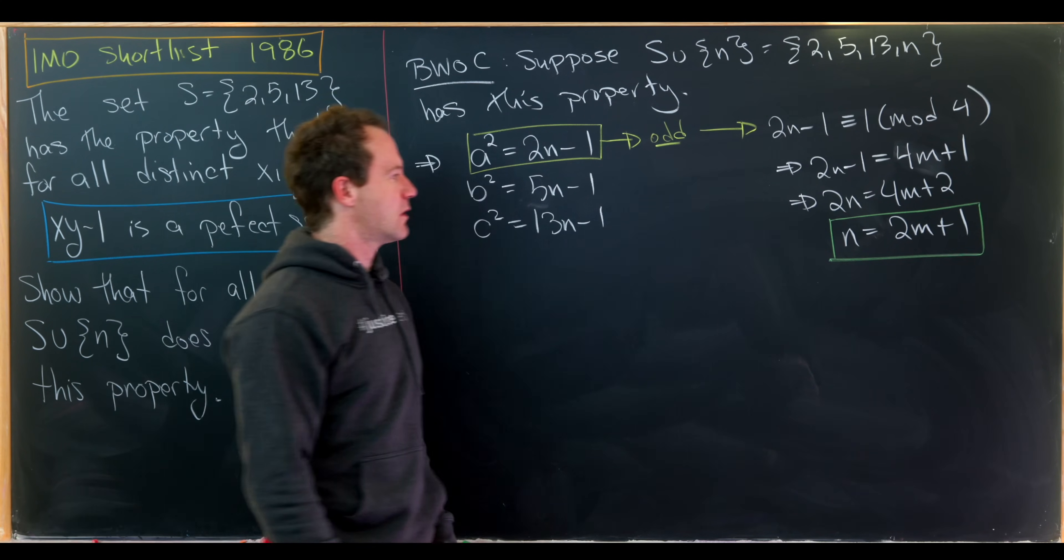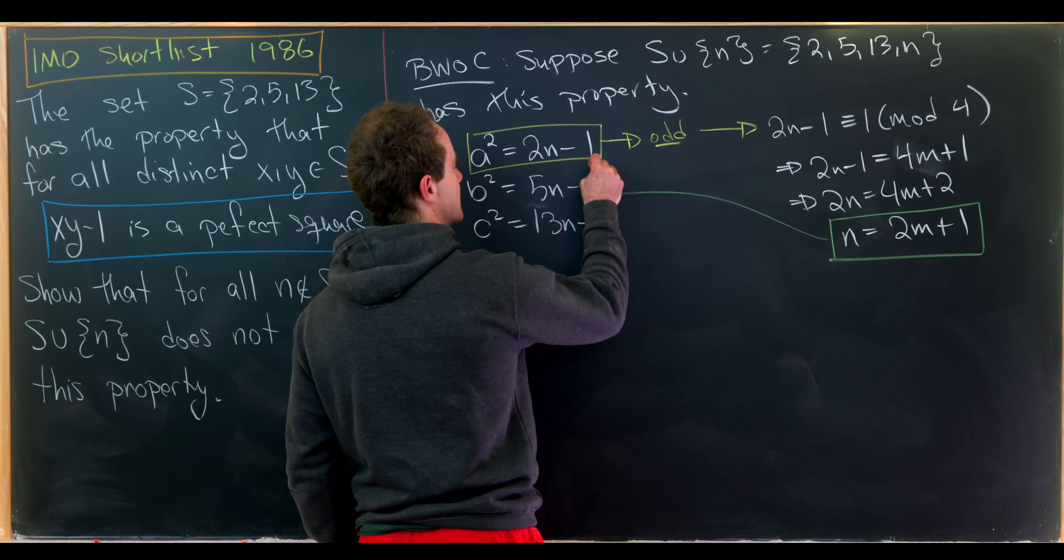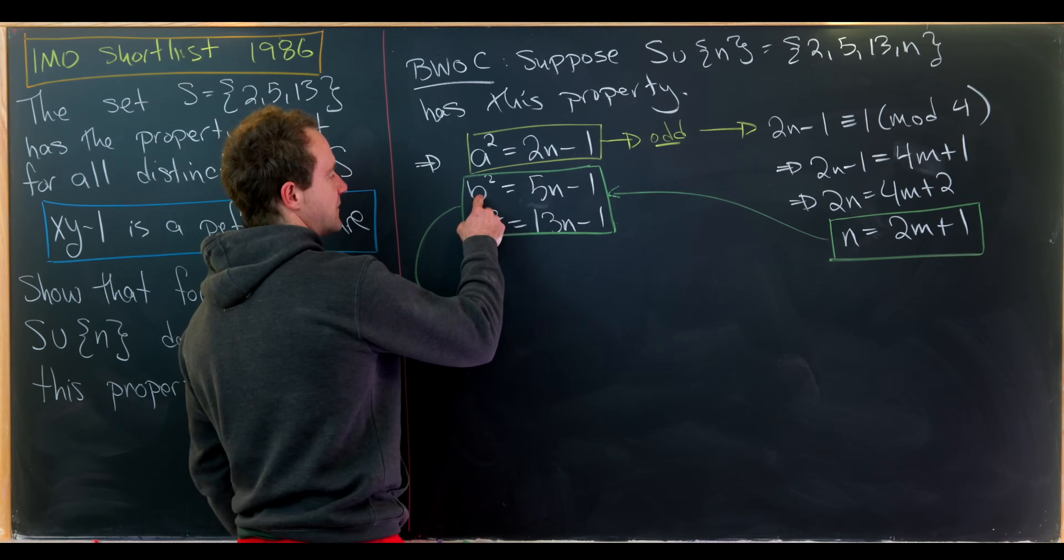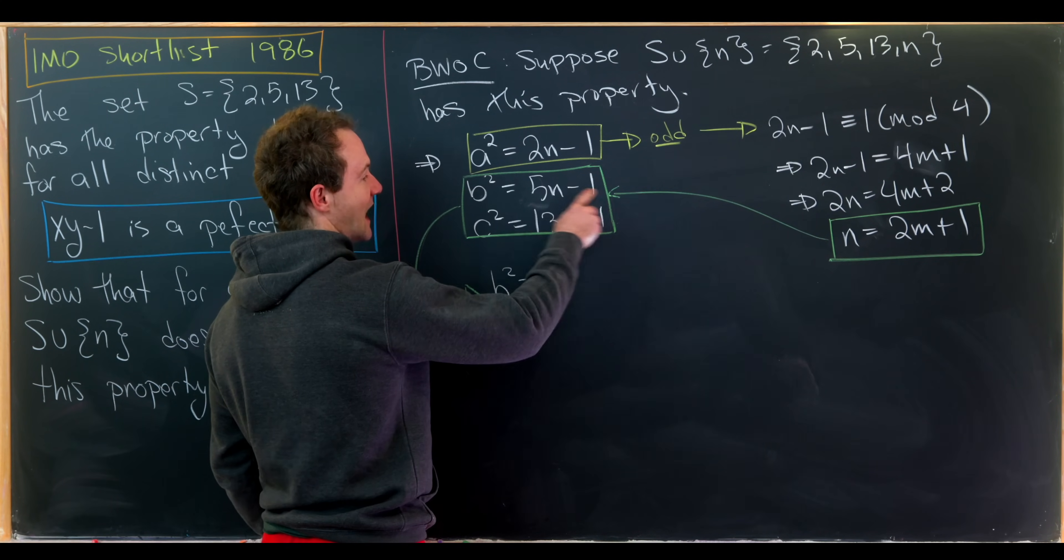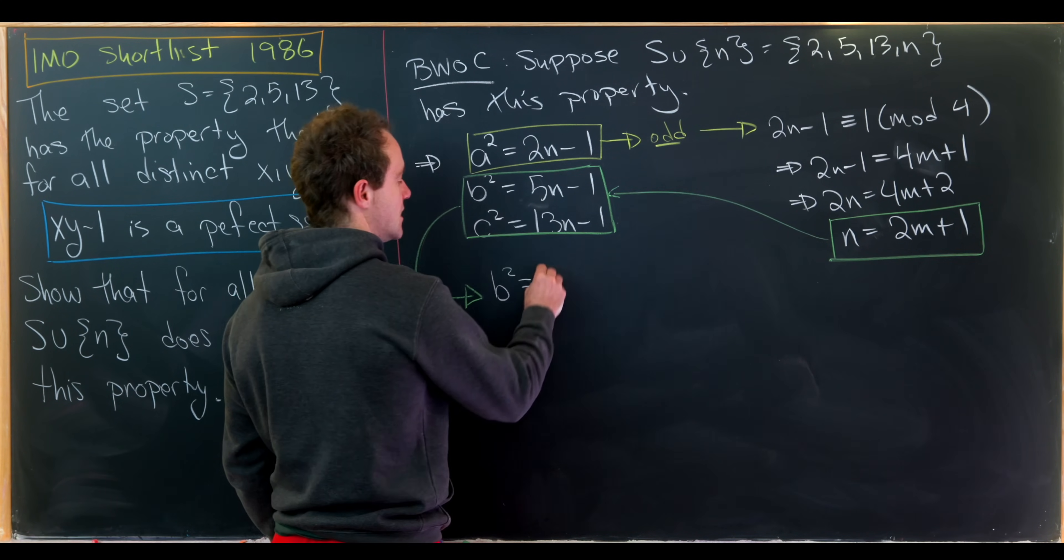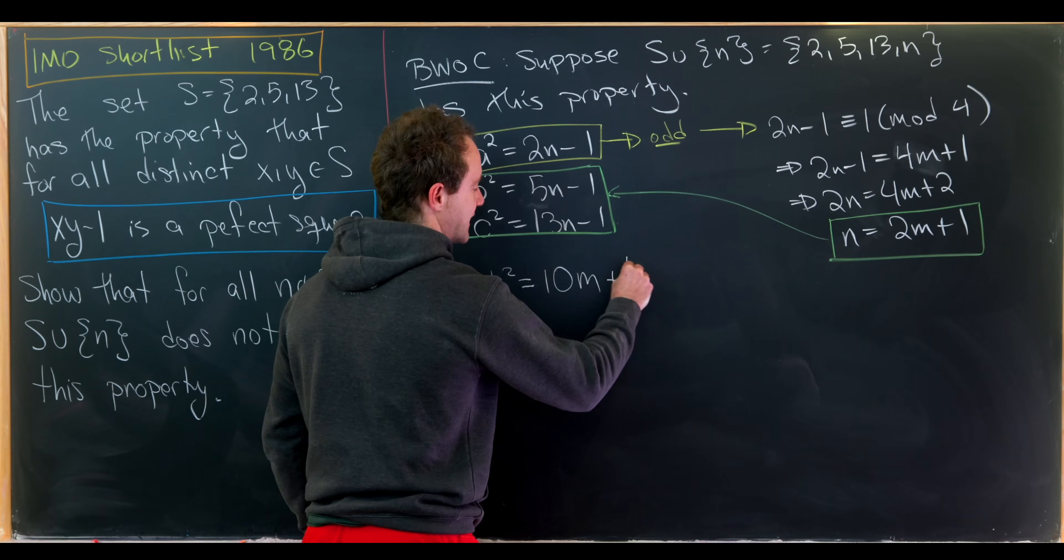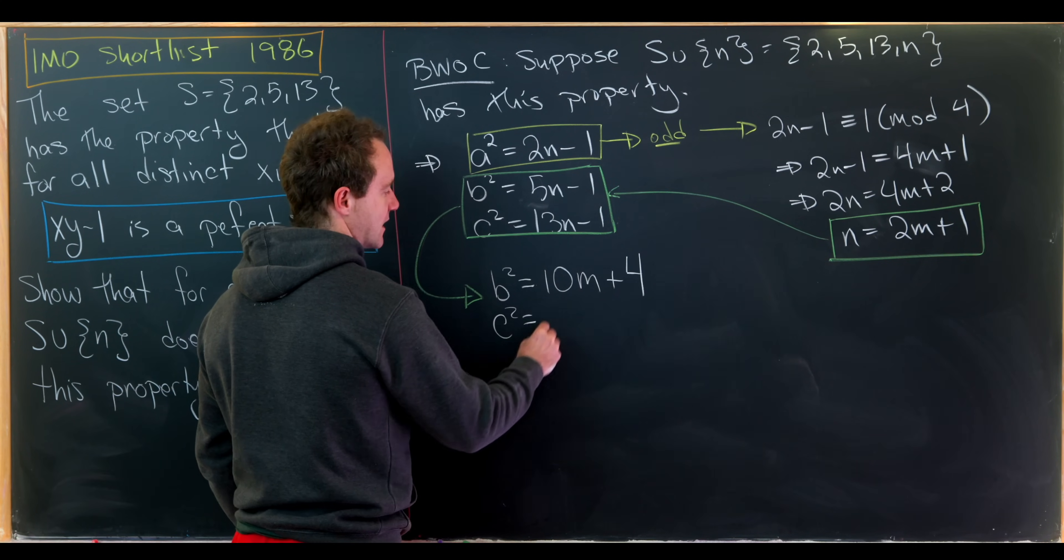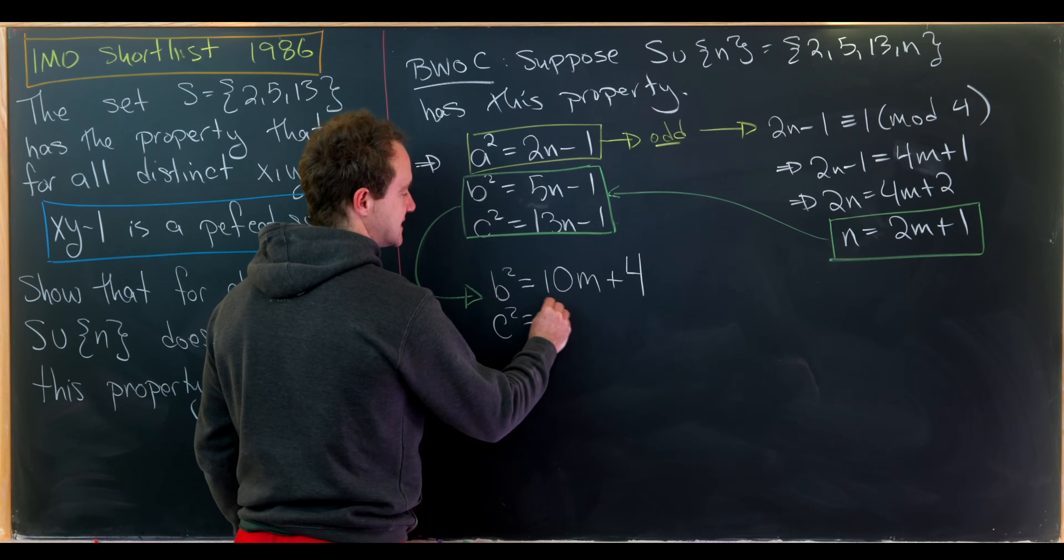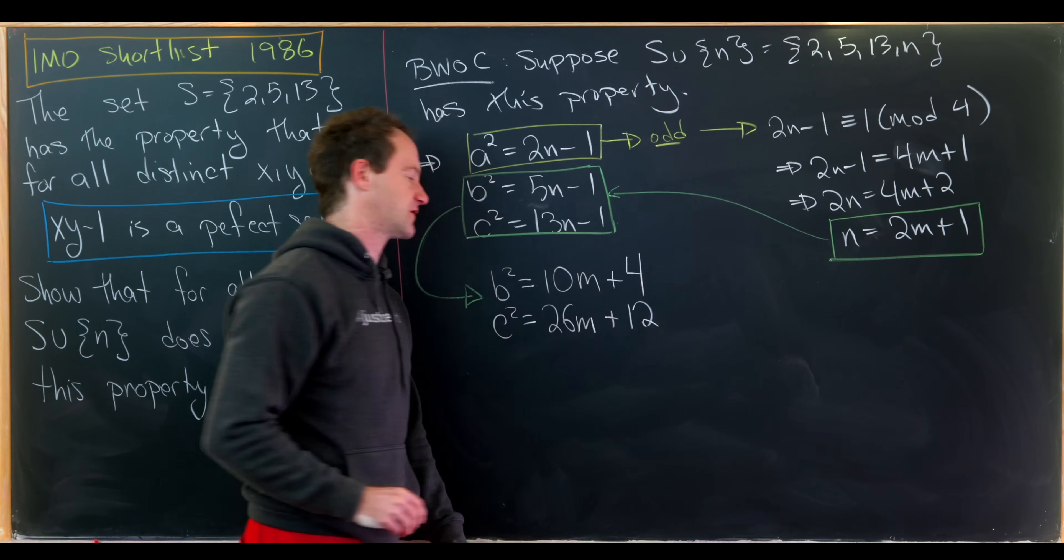Okay, so now what we'll do is take this condition and loop it back into these remaining equations. So for this first equation we'll get b squared equals, so 5 times 2m plus 1 will give us 10m plus 5 minus 1, so that'll be plus 4. And similarly we'll have c squared is equal to, let's see, that'll be 26m plus 12 for similar reasons.